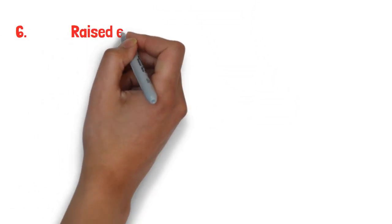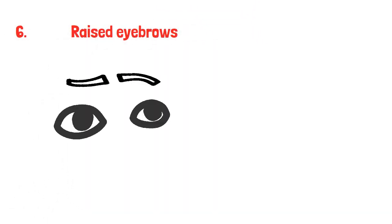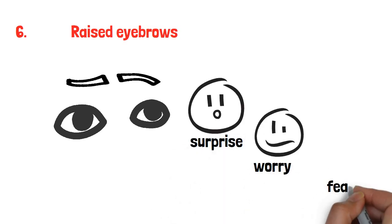6. Raised eyebrows. Raised eyebrows could signal discomfort. Three major emotions make your eyebrows go up. Surprise, worry and fear.